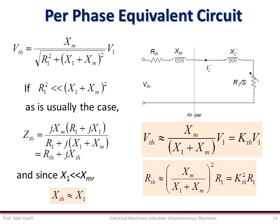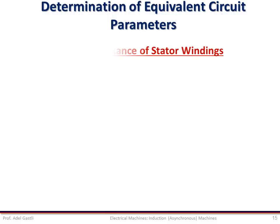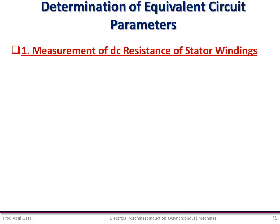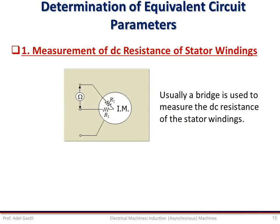All these equivalent circuits are based on the knowledge of the stator and rotor parameters, such as resistances and reactances of the windings. Similarly to the transformer, these parameters are usually measured using two tests, which we will see in the next slides. Let's start with the stator resistance, which is usually measured using the DC test with an ohmmeter or a bridge.